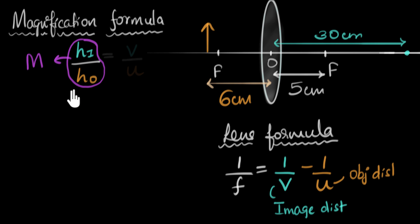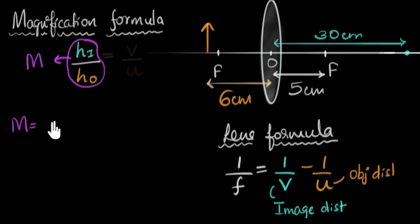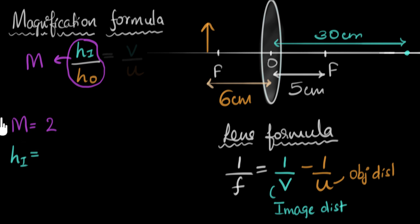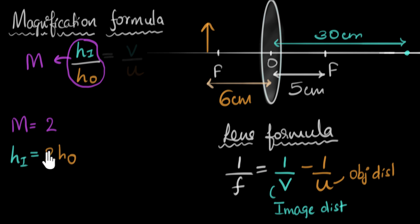By the way, if you've studied mirrors, the concept here is exactly the same. But if you're not familiar with this, don't worry — we'll take a couple of examples to make it clear. Let's say M is two, meaning this ratio is two. That would mean the height of the image is two times the height of the object, so the image is twice as big as the object — twice magnified. That's why this number, this ratio, is called the magnification.